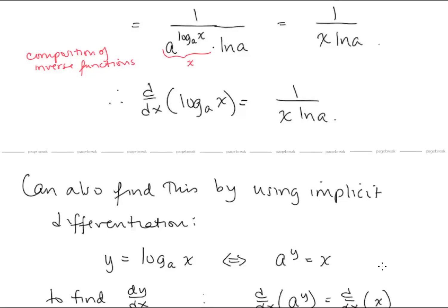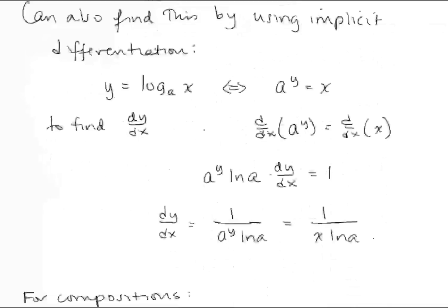We can find the same result using implicit differentiation. If y equals log base a of x, that's the same as a to the y equals x. Differentiating with respect to x: the derivative of a to the y is a to the y ln a times dy/dx, and the right side gives 1. Solving for dy/dx gives 1 over a to the y ln a. Since a to the y equals x, this simplifies to 1 over x ln a — the same result.